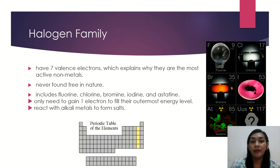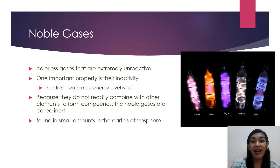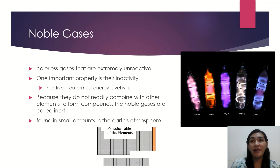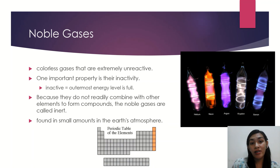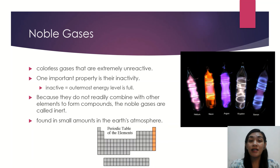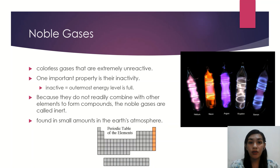Last, we have the noble gases. They are called noble because they rarely bond with other elements — their outermost energy level is full, so they don't need others to make them stable. Because they do not readily combine with other elements to form compounds, the noble gases are also called inert gases, meaning unable to move. They are found in small amounts in the Earth's atmosphere. The noble gases include helium, neon, argon, krypton, xenon, and radon.